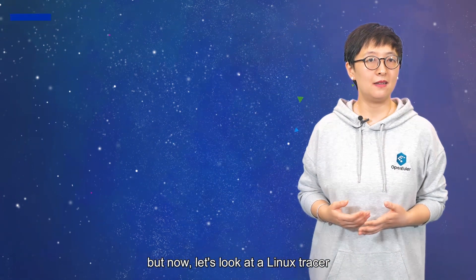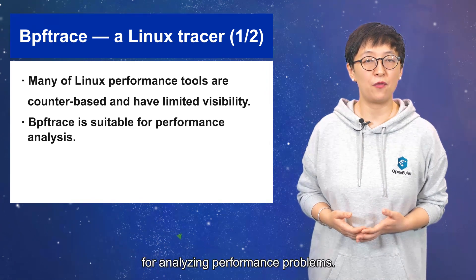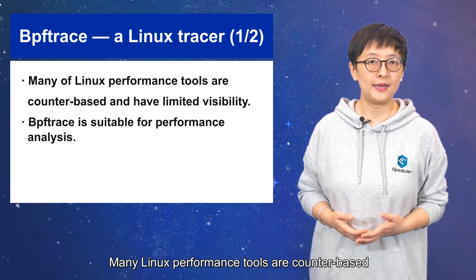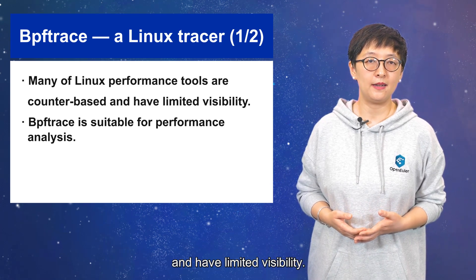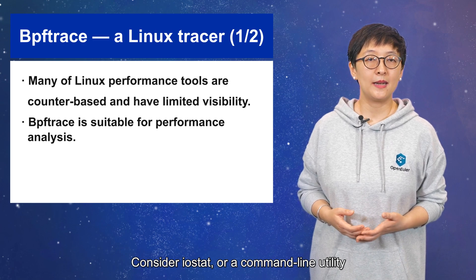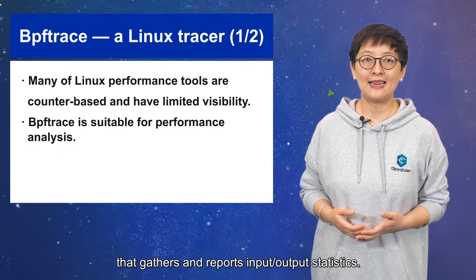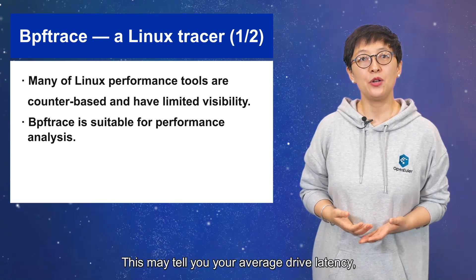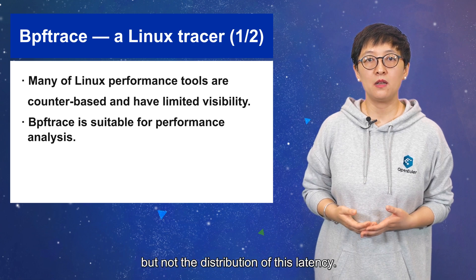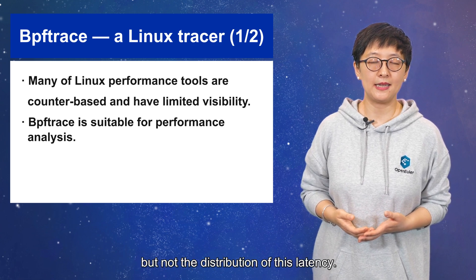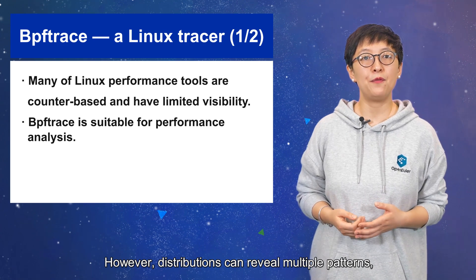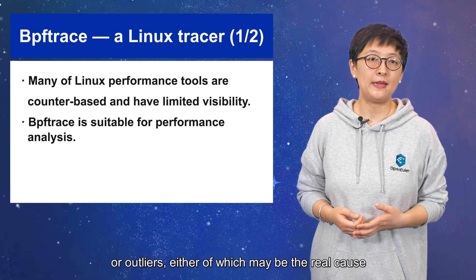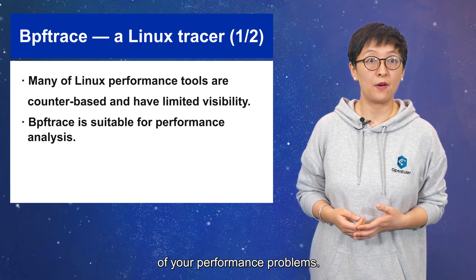Now let's look at Linux Tracer for analyzing performance problems. Many Linux performance tools are counter-based and have limited visibility. Consider IOSTAT, a command line utility that gathers and reports input-output statistics. This may tell you your average drive latency, but not the distribution of this latency. However, distributions can reveal multiple patterns or outliers, either of which may be the real cause of your performance problems.